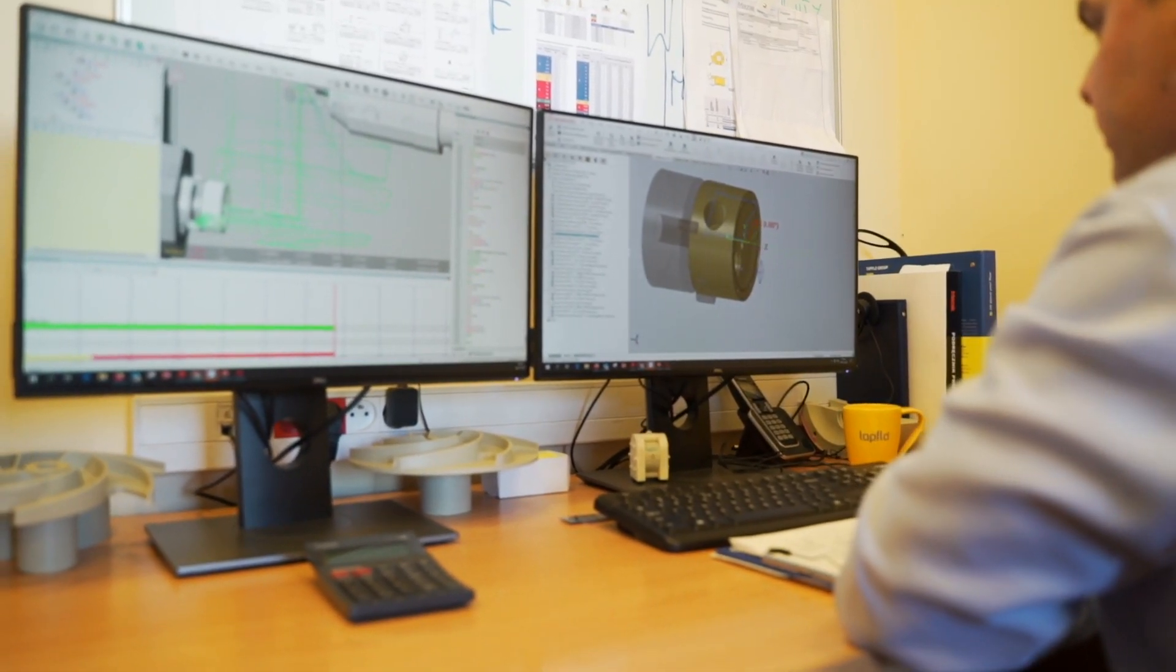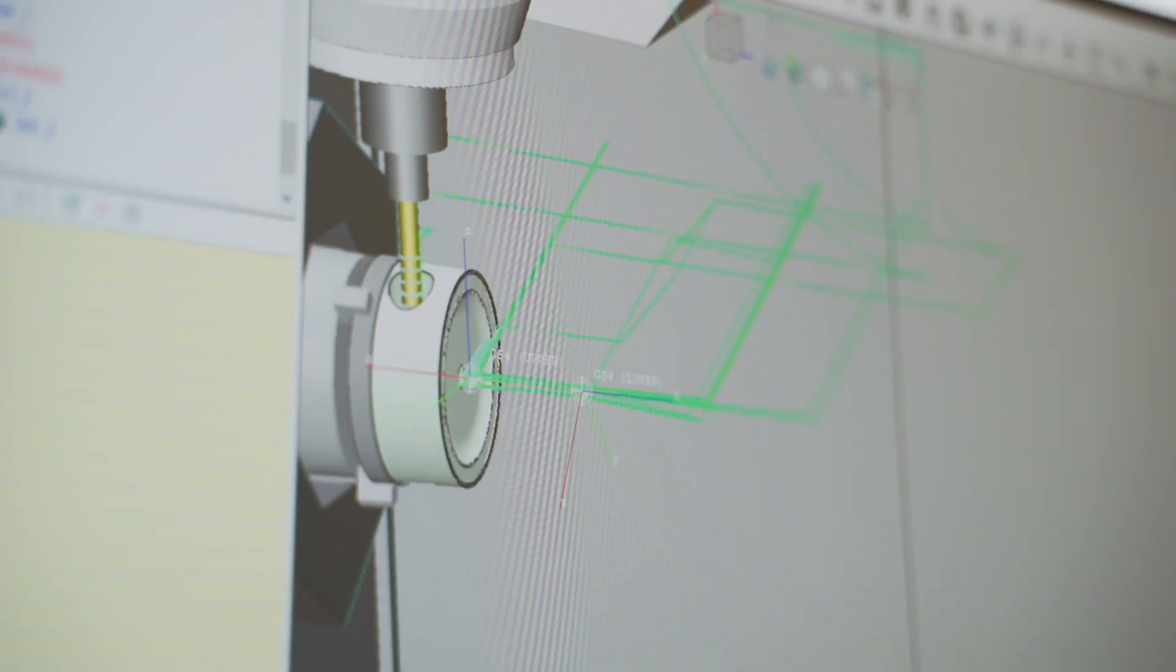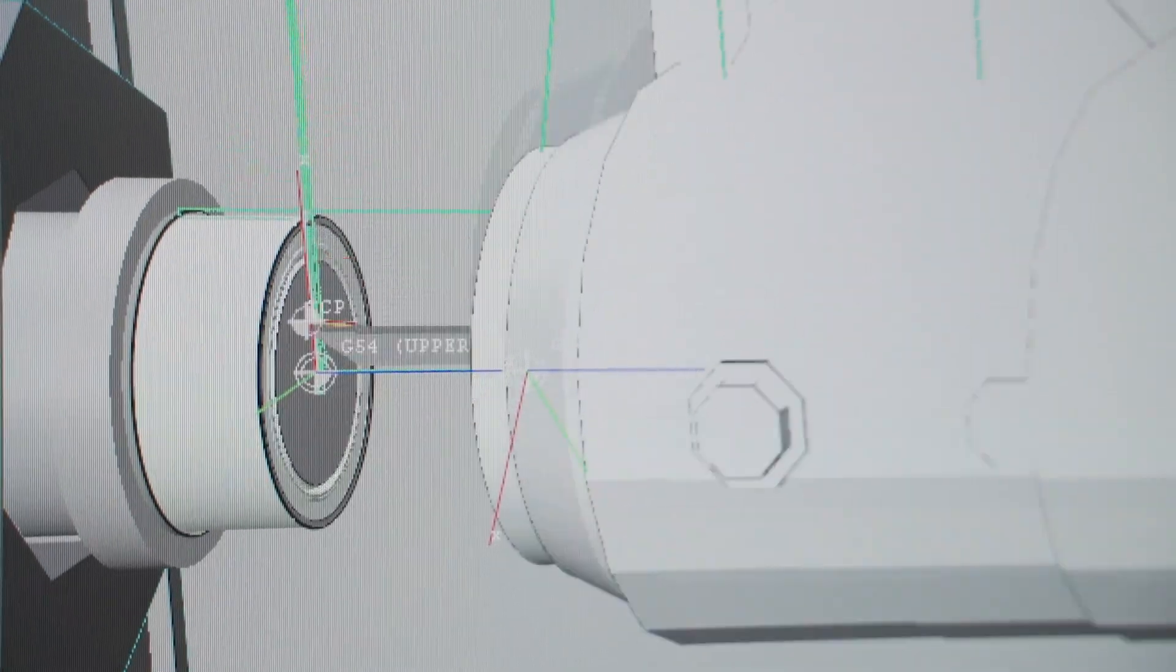A process engineer confirms that the designed models are optimized for production. He also prepares codes for CNC machines.